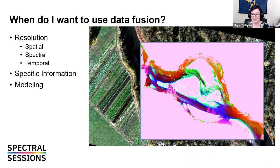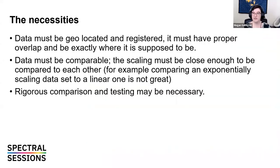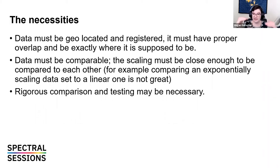Those are the major ways we tend to use data fusion, even if some of them you might not think about it like that. Before jumping into cool data fusion examples, let's talk about what is absolutely necessary at the lowest level. One: the data must be geolocated, orthorectified, and registered. It has to be exactly where it's supposed to be, and it should have proper overlap. If one image goes beyond the area, that's fine — cut it down — but you should only focus on the smaller overlapping area.